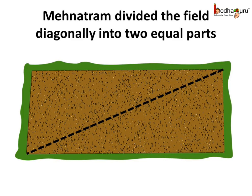He wanted to harvest two different crops in his field. So what did he do? He divided land diagonally into two equal parts such that each part was a triangle.